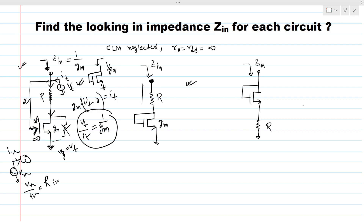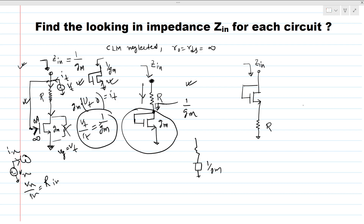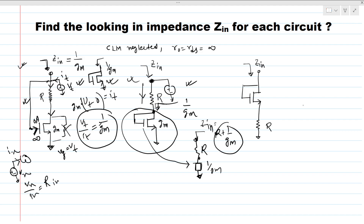Now let's solve the second circuit. If we apply a test voltage here, there is only one path for current to flow. Looking from this terminal downward, the impedance is 1/gm — we just found that. This is a diode-connected device, so looking here is 1/gm. The circuit looks like 1/gm in parallel with — actually in series with — R. So the two impedances in series give an effective impedance of R plus 1/gm. This is the answer for this circuit.